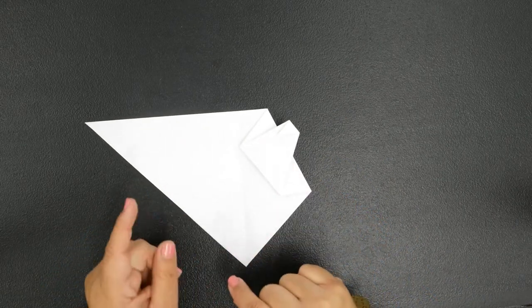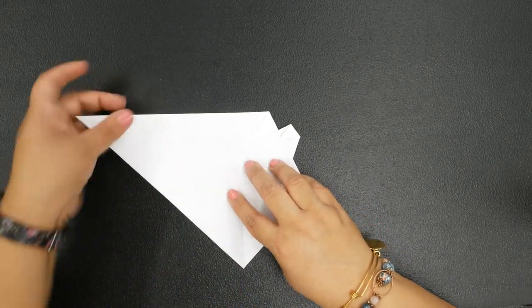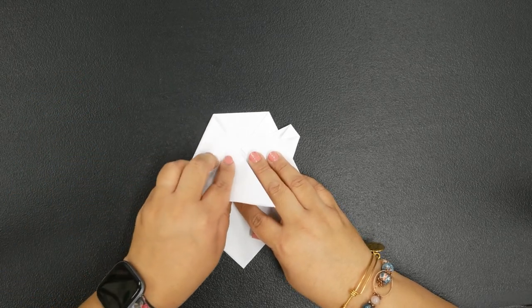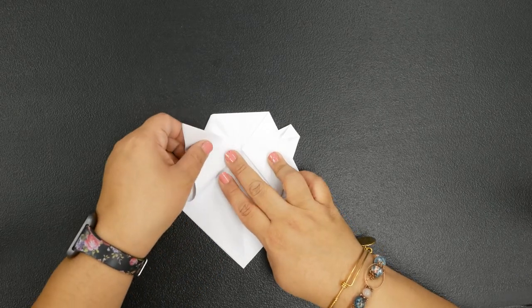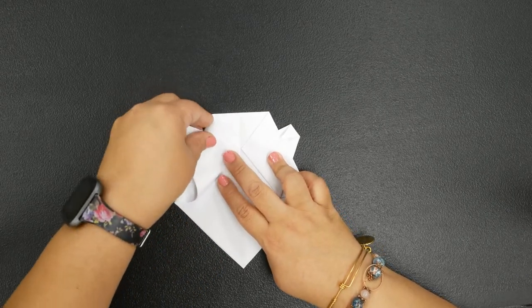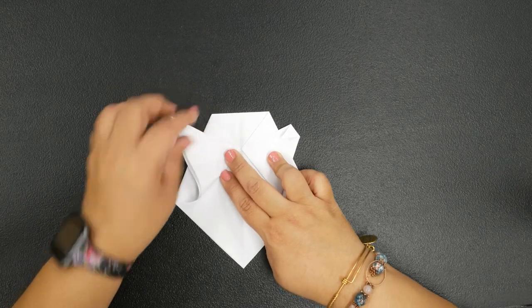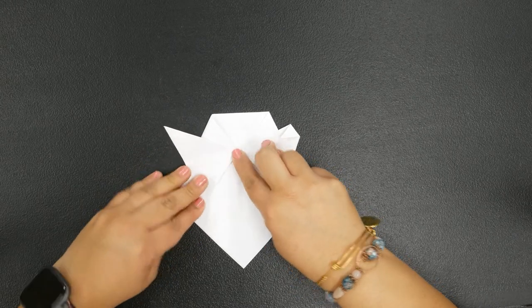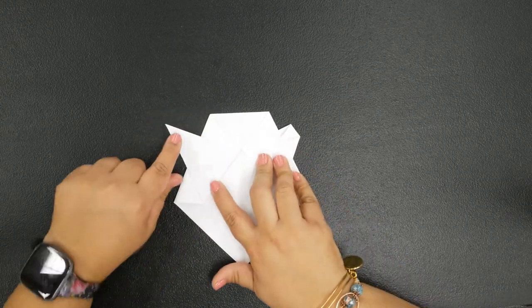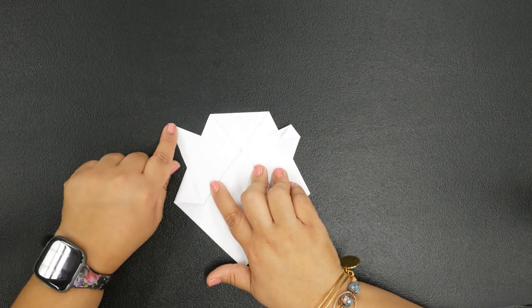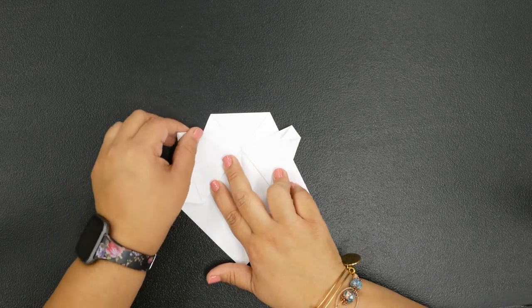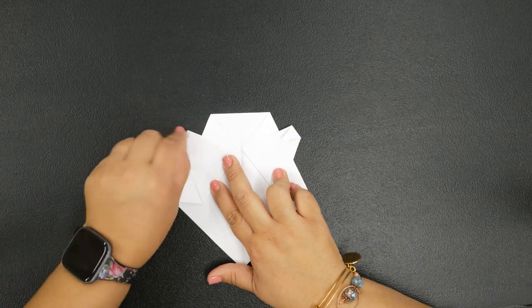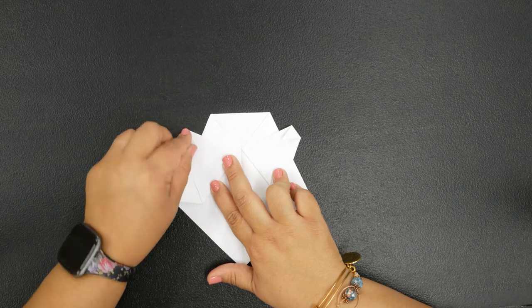We're going to do the same exact thing to the opposite side. Grab this side, bring it in a diagonal direction, scoop it back over to the left, and crease down just like this. And then our little tip here, bring it back in.